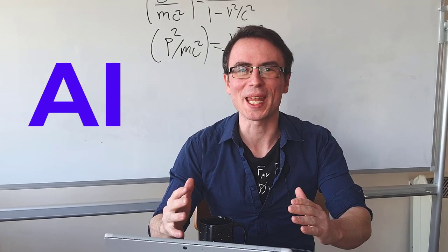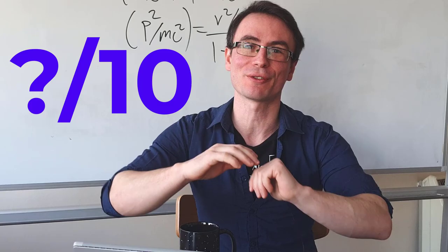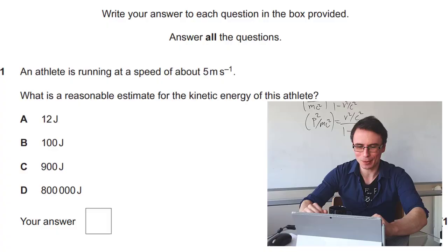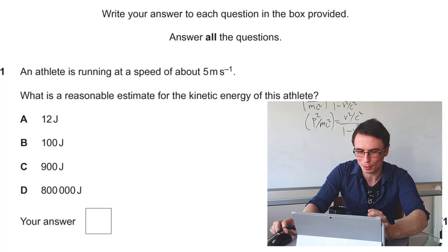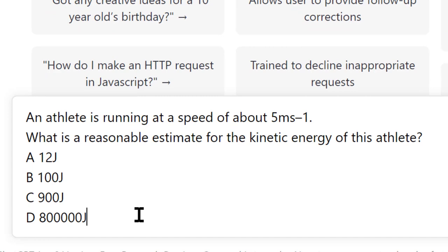Let's give the AI a physics test. I'm going to give it 10 multiple choice questions. Stay tuned for the final score. Question 1: An athlete is running at a speed of 5 meters per second. What is a reasonable estimate for the kinetic energy of this athlete?